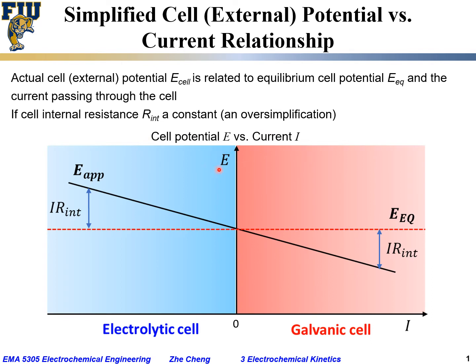The vertical axis is cell potential, the horizontal axis is current, or sometimes current density. This is zero current and zero voltage. The red dashed line represents the equilibrium cell potential.